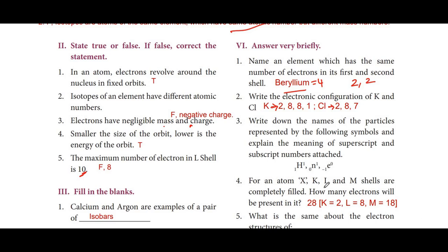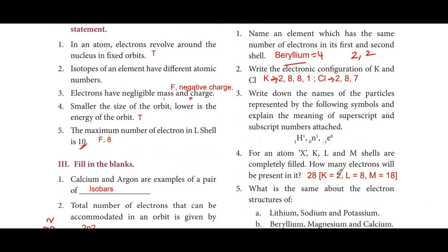Fourth: For an atom X, the K, L, M shells are completely filled. How many electrons will be present in it? K shell holds 2, L shell holds 8, and M shell holds 18 electrons. So atom X has atomic number 28 — a total of 28 electrons.